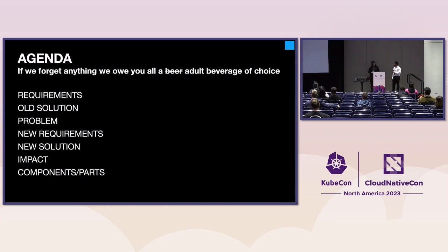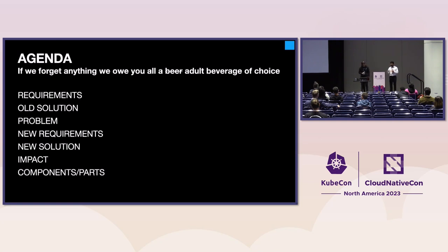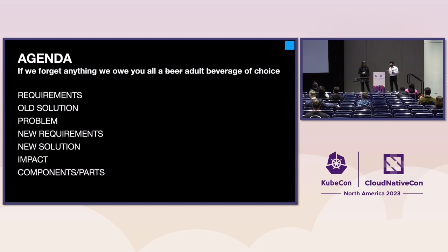Today we are going to talk about a few things. First, we'll dive into what our patching requirements are. Then we'll talk about a tool we developed to automate our patching. As we grew and expanded into a lot of regions, we encountered a new set of problems which brought in a new set of requirements. We then figured out how to fix our automation and manage security patching at scale. We'll discuss the impact we had with the new solution and then deep dive into how we implemented it.